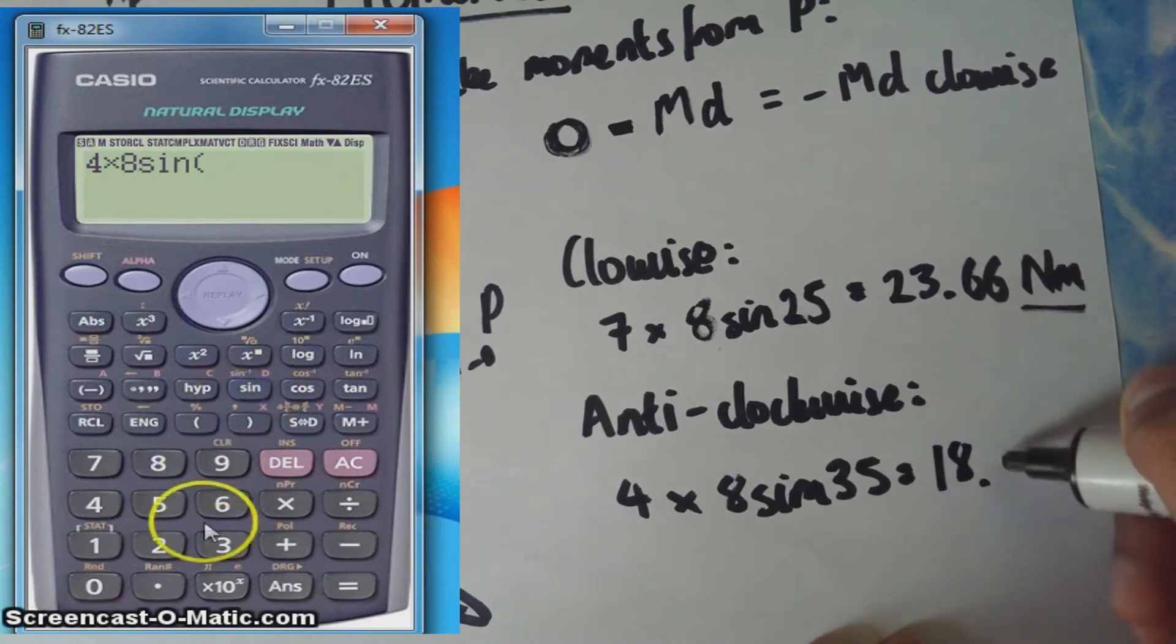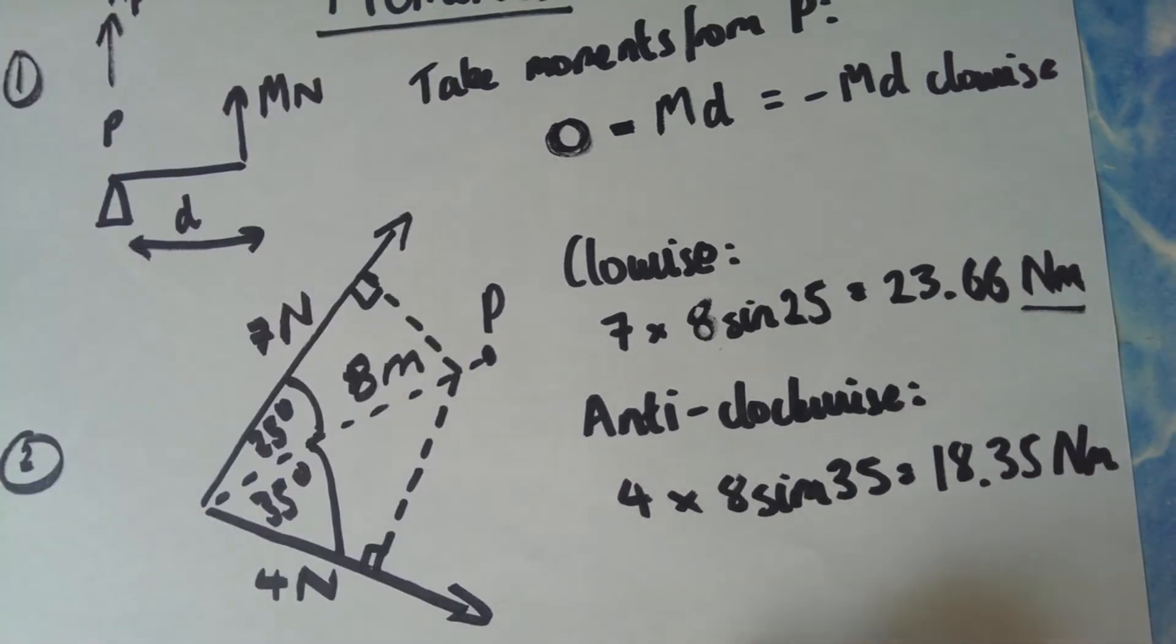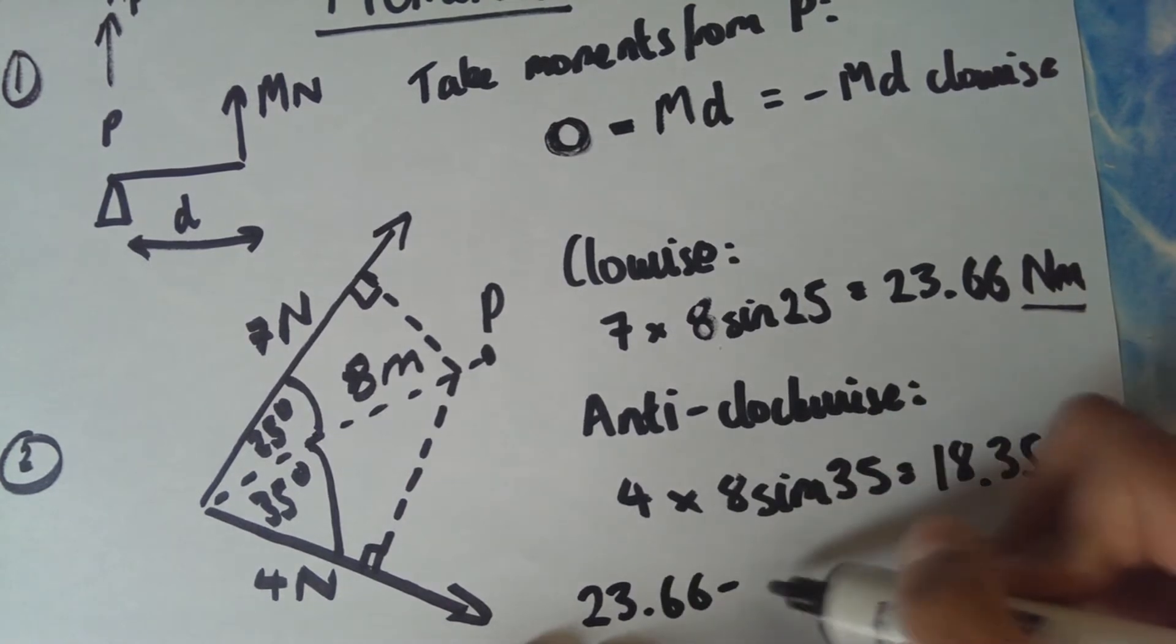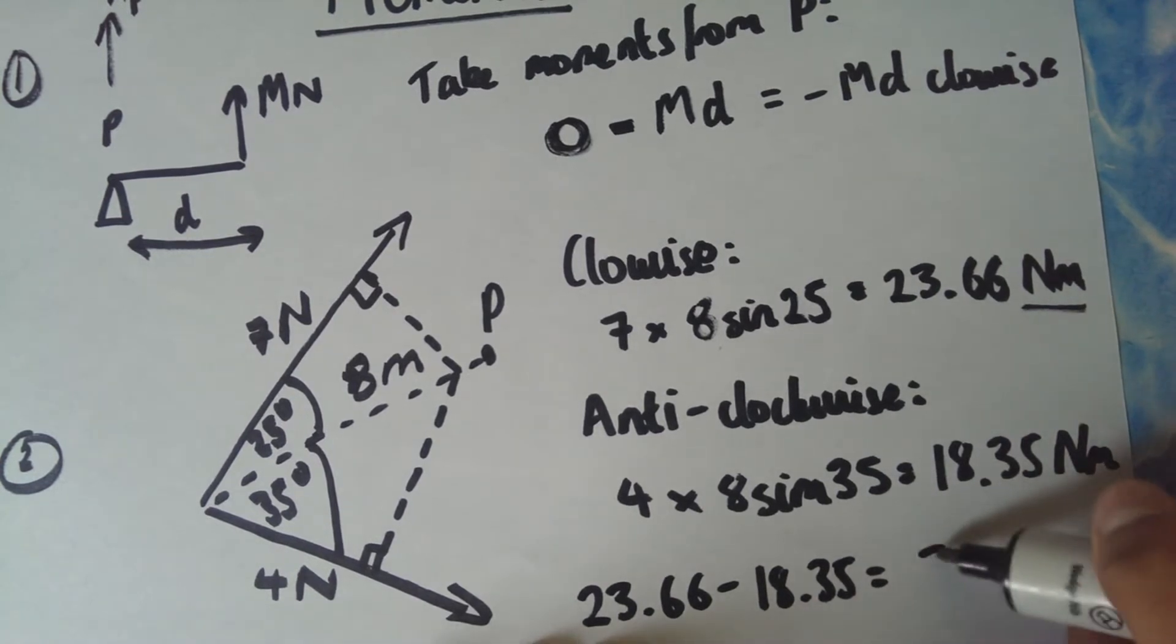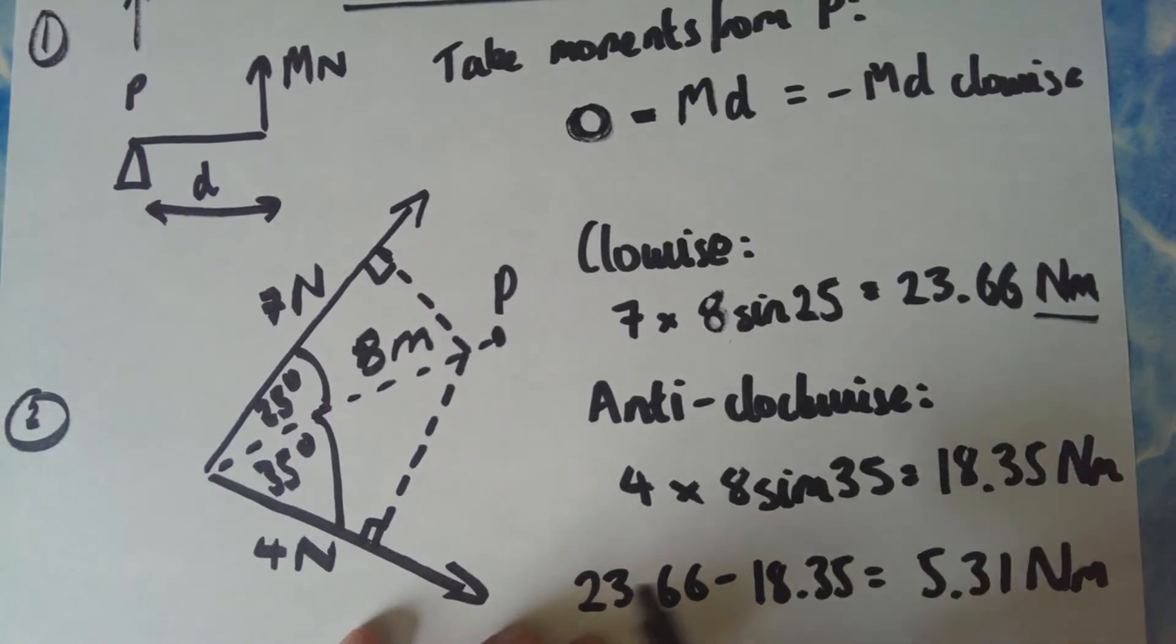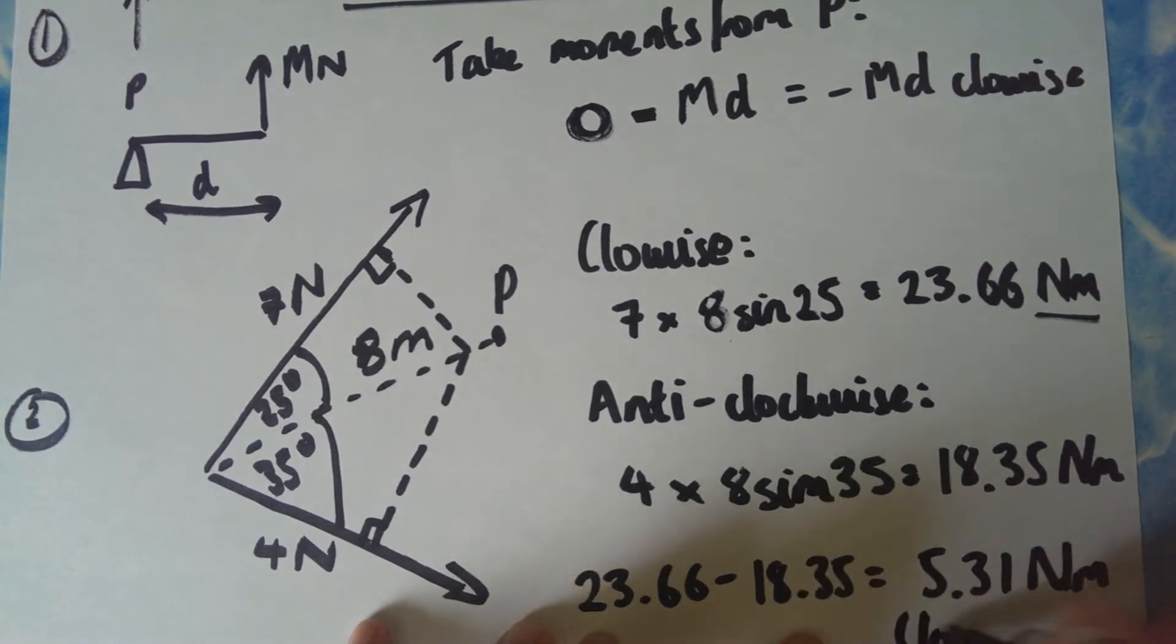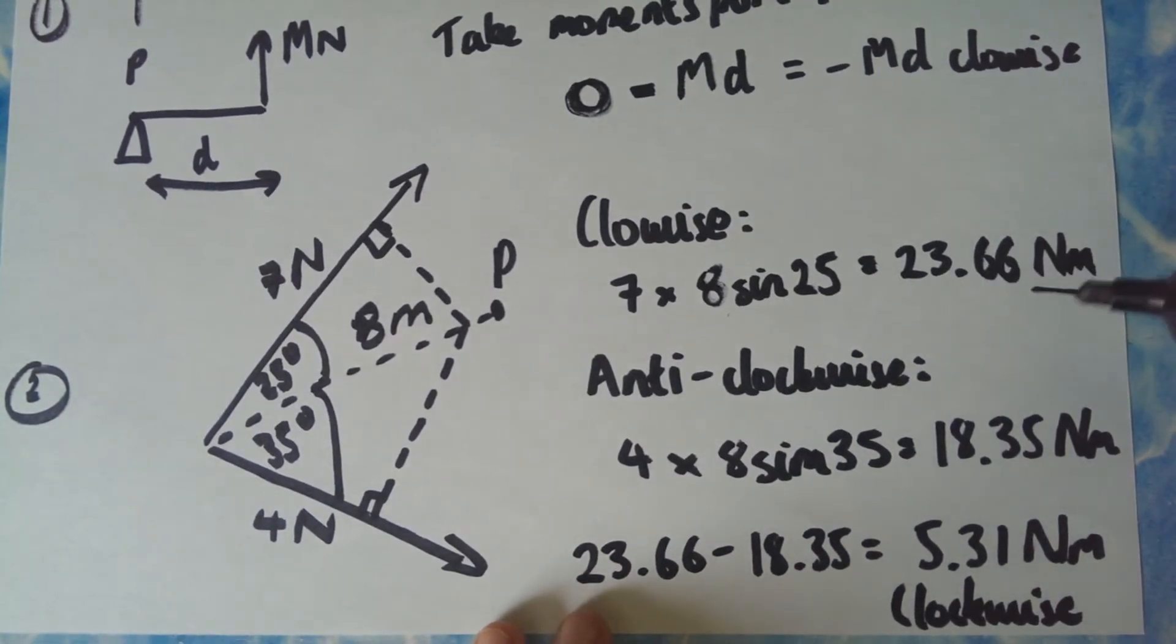So the total moment on this system is 23.66 minus 18.35 giving 5.31 Newton meters. But also you have to remember because we took clockwise positive, you have to write clockwise. You shouldn't lose marks as long as you write which way you're taking it. So obviously I've written here that I've taken it clockwise and anticlockwise, so therefore my final moment being positive is clockwise.